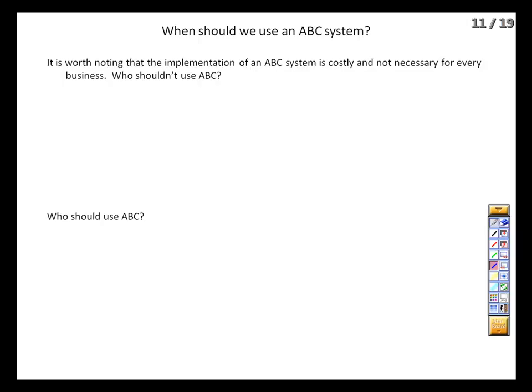Going through the ABC system can be very costly, both in terms of hiring outside specialists and the time management needs to spend on it instead of other duties. And once we've done the cost analysis, we need to track multiple costs and multiple drivers. We always have to weigh the benefits against the costs of generating those benefits. So which types of firms would not get a lot out of implementing ABC? Well, companies that produce homogeneous products. The costing issue we just saw came about because we had labor-intensive products and a capital-intensive product, and using a singular driver misapplied costs.